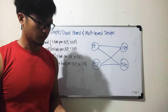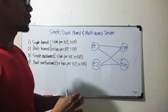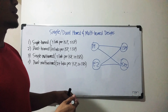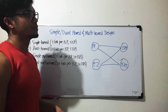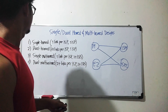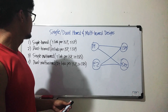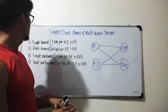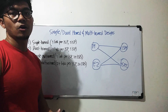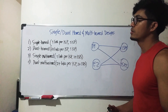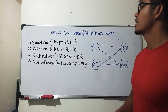By the way, with single-homed — where you have a router connected to a single router on the ISP side — you don't have to use BGP for that kind of connection. But with the rest, we can use BGP because we have more than one link. That covers single-homed, dual-homed, single multi-homed, and dual multi-homed designs.